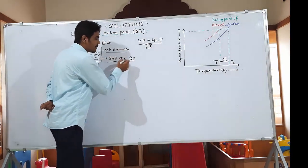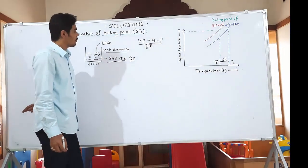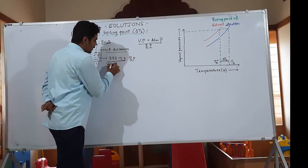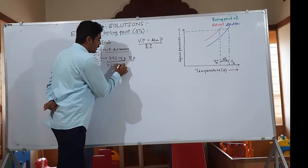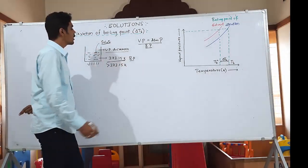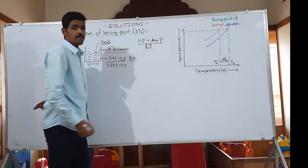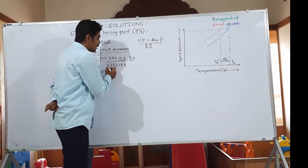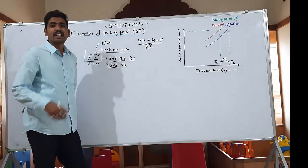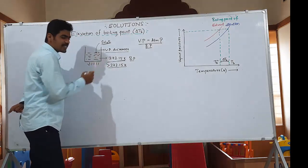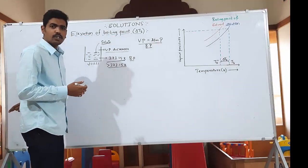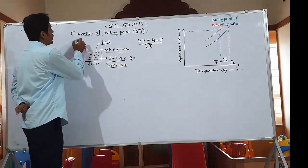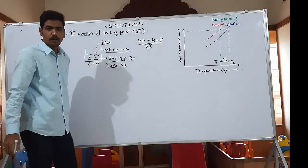So the temperature of the solution increases because of the decrease in vapour pressure. You need to supply more heat energy, and at a higher temperature the vapour pressure becomes equal to atmospheric pressure and the water will start to boil — but not at 373.15 Kelvin; it would be greater than 373.15 Kelvin, depending upon how much solute was added. That increase in boiling point upon addition of a non-volatile solute is known as elevation in boiling point.